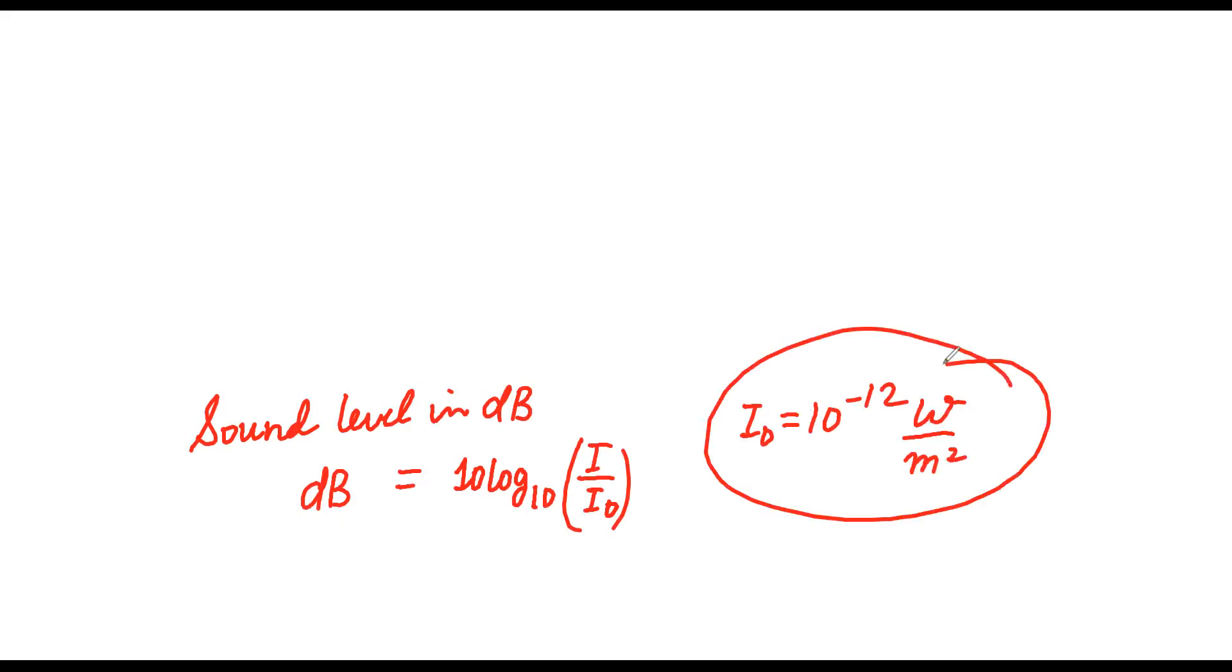Intensity in decibels, sound level. Sound level in decibels is written as dB equals 10 log to the base 10, I by I naught. I naught is fixed, 10 to the power minus 12 watt per meter square.